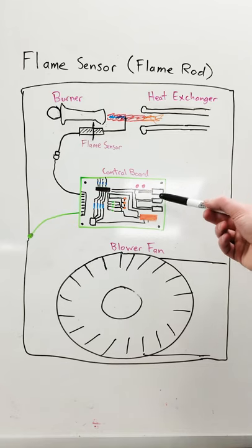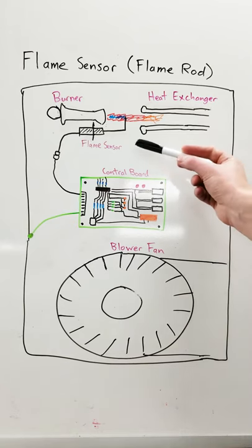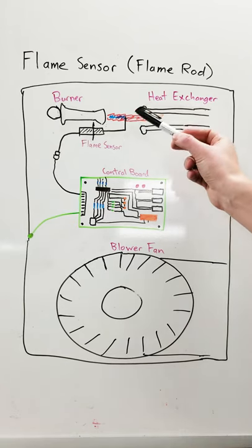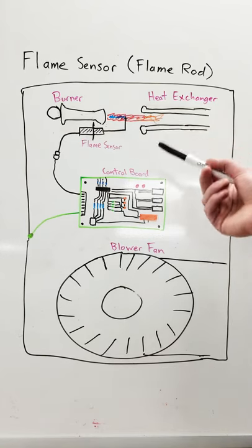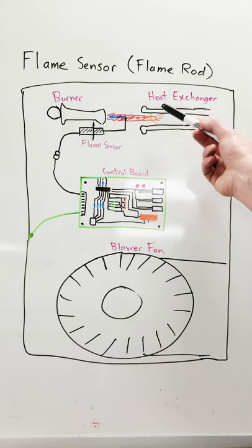If you have a high-efficiency furnace with a control board, then you'll also have a flame sensor which monitors the burner. Without a flame, the control board will shut off the gas and shut off the burners.